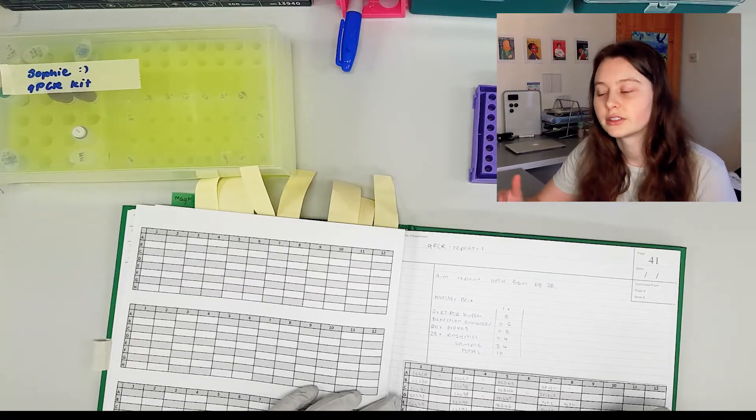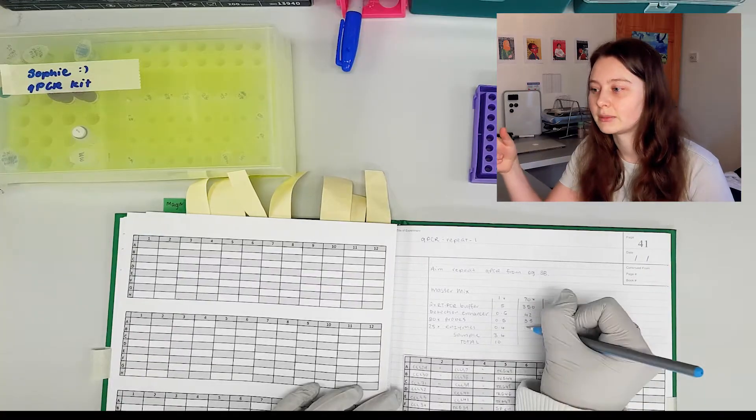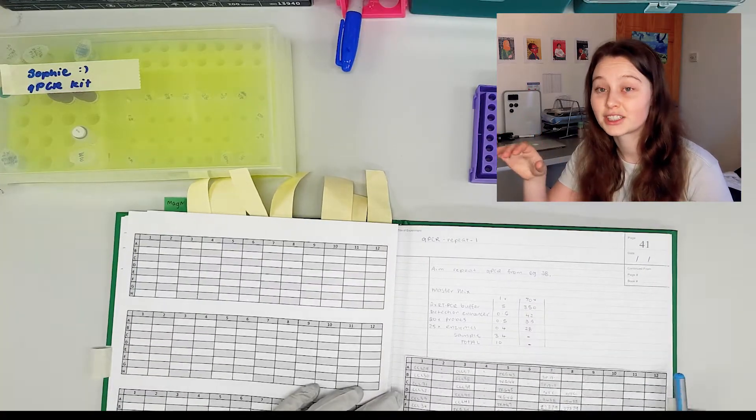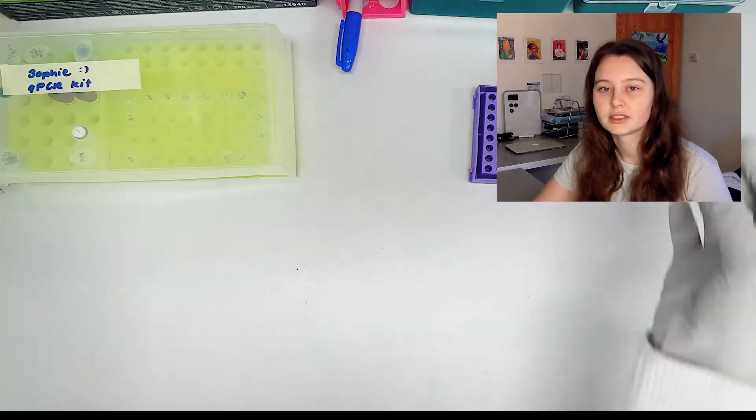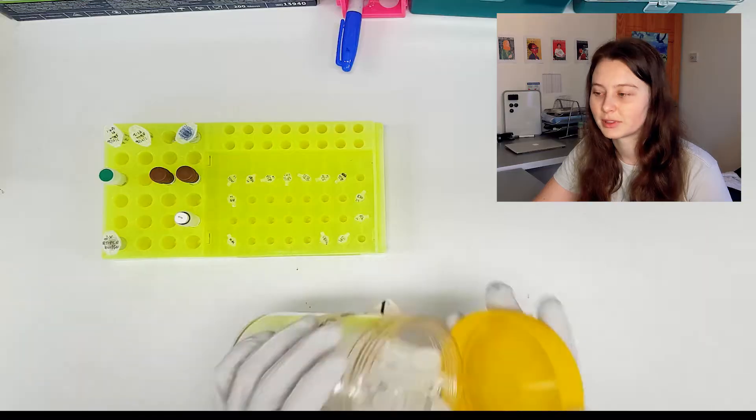So first I wrote out those concentrations at a one time, so how much I would need for one reaction, and then I wrote it out at 70 times. I give myself about 10% extra, there is nothing worse than getting halfway through a plate and then discovering that you don't have enough to finish the plate.